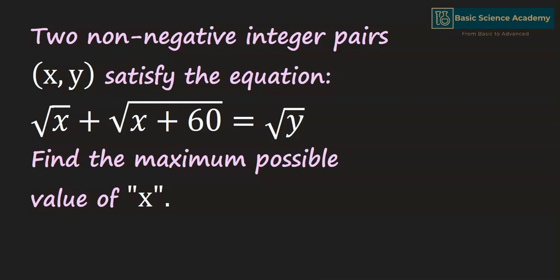Here we're going to discuss the problem. Two non-negative integers x and y satisfy the equation: square root of x plus square root of (x plus 60) equals y. Find the maximum possible value of x.